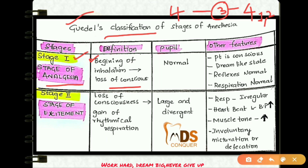In stage one, the pupil is normal. Other features include: the patient is conscious, in a dream-like state, reflexes are normal, and respiration is normal. So all reflexes and respiration are normal in stage one, the stage of analgesia.